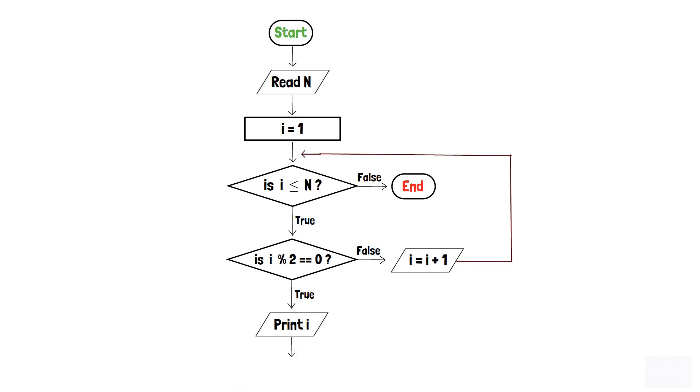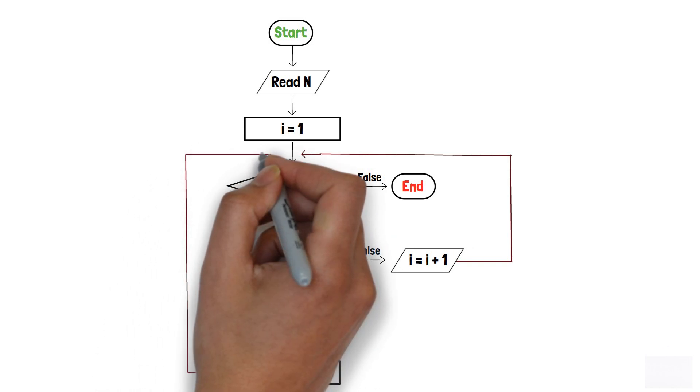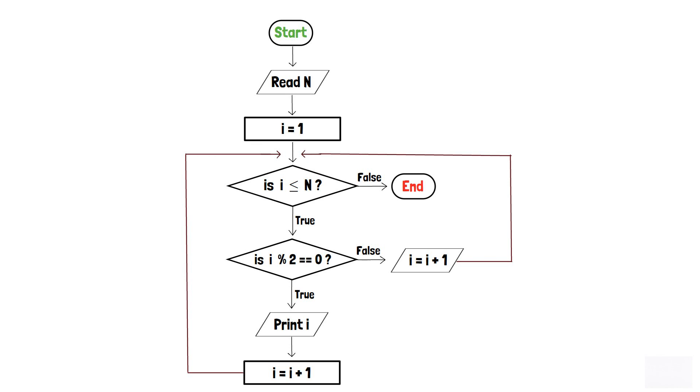Finally, i is increased by 1 in a process box. And again, a loop is created before the first decision box to ensure that the value of i is rechecked with each iteration.